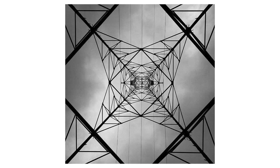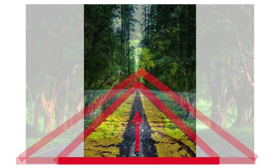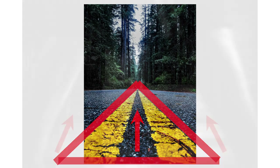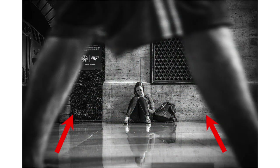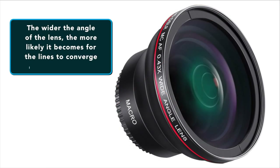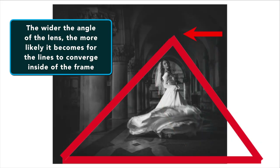Another thing to look for are what's known as converging triangles. Whether the lines you're dealing with are straight or diagonal, if they extend far enough into the distance, you'll start to see the lines converge. That is where you start to see a lot of triangles once you start looking for them. These triangles can appear inside or outside of the frame — it's just a matter of the distance you have to work with. The wider the angle of the lens that you shoot with, the more likely it becomes for the lines to converge inside of the frame.